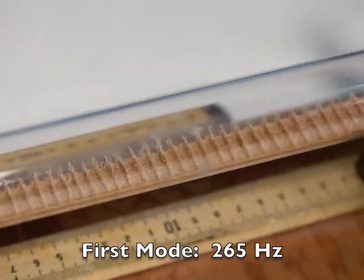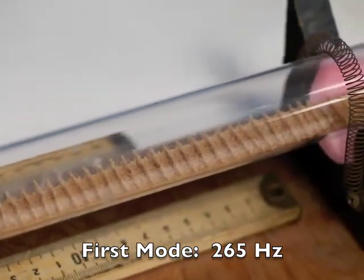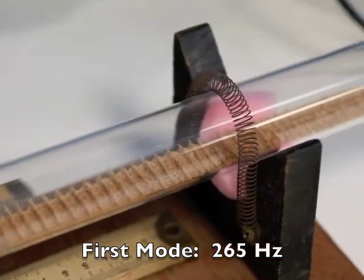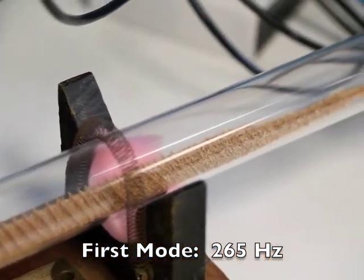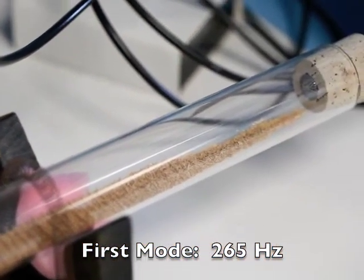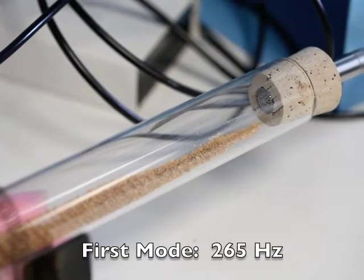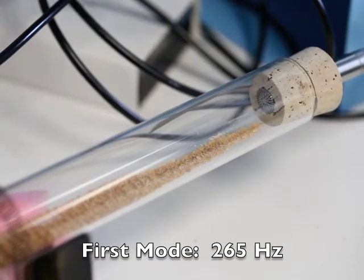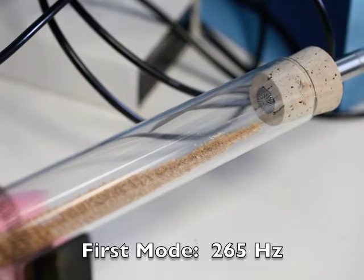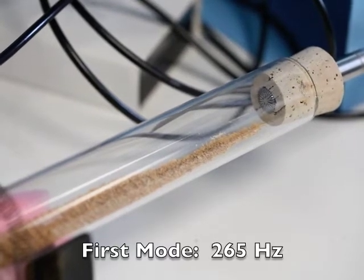If I move to the right towards the microphone end, you see that there is no cork dust agitation. So that's a velocity node or a pressure anti-node.